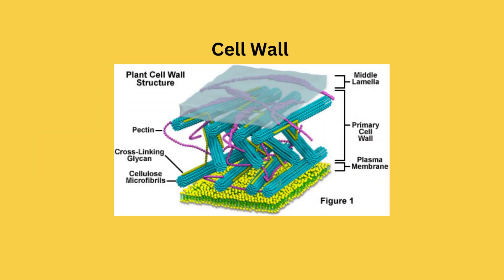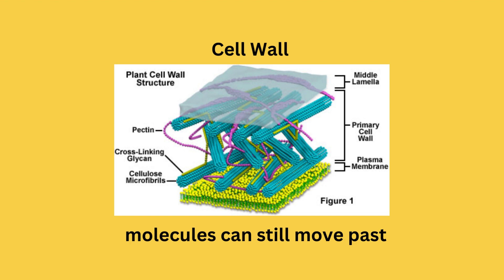A plasma membrane isn't the only structure that facilitates how molecules enter and exit. Some cells, such as plant cells, will also have a cell wall in addition to the plasma membrane. Although it is called a wall and it may seem like nothing can get past it, it is actually permeable as well, meaning things can move past it. Cell walls are composed of carbohydrates, such as cellulose, in which you can see the cellulose can still allow molecules to move past it.